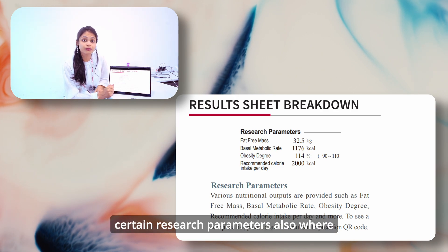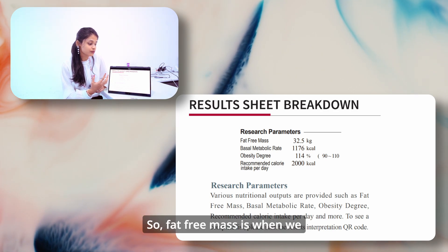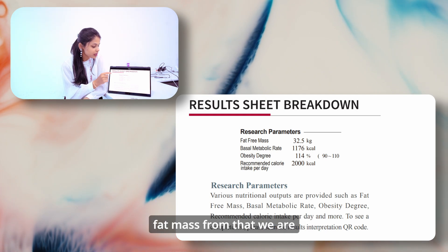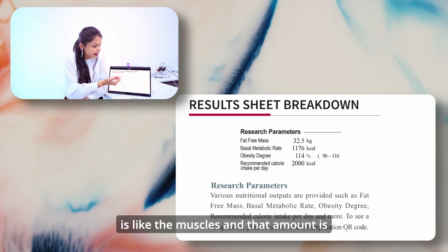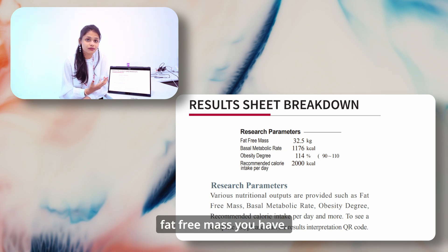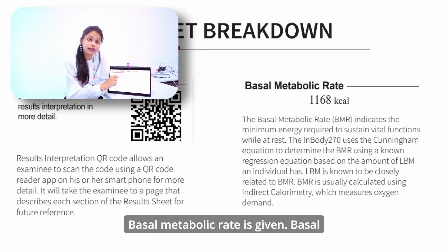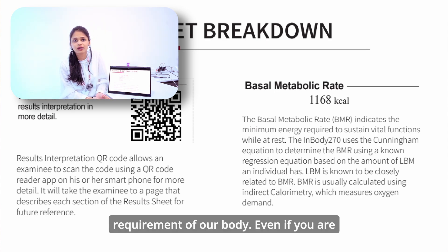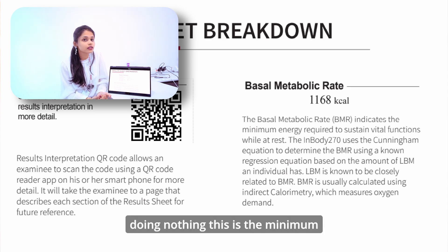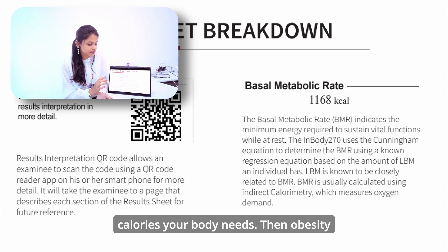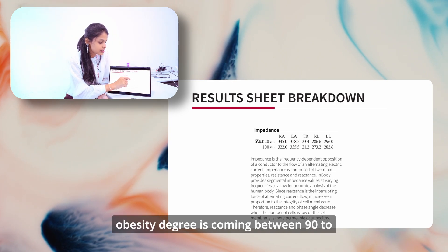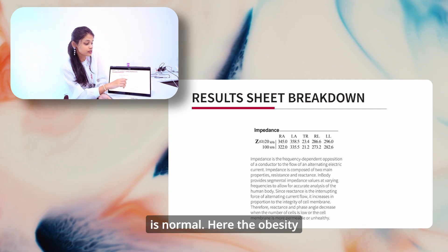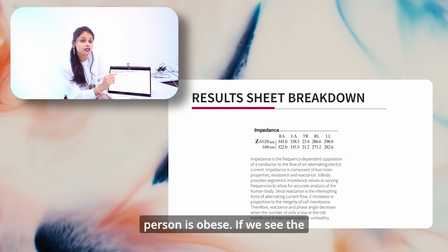There are also research parameters where fat free mass is mentioned. Fat free mass is the weight minus the fat mass — essentially the muscle component. Basal metabolic rate (BMR) represents the resting calories, which is the minimum calorie requirement of the body even when sleeping or doing nothing. Obesity degree is also given: if it is coming between 90 to 110 percent, the person is normal. In this example, obesity degree is 114 percent, indicating the person is obese.